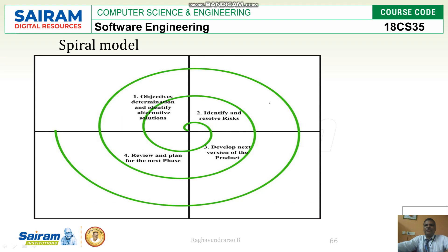In the spiral model, see the diagram first — there are four parts: requirements identification, resolving the risks, developing the versions, and then a review and plan. So here also we will have requirements, then design, then development, then reviews.